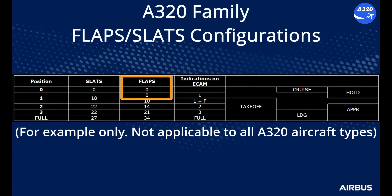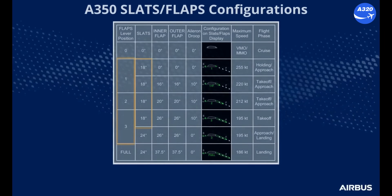As for the flaps position, they are at 0 degrees for both a flaps lever position of 0 or 1. Keep in mind that the flaps lever position at 1 can correspond to a flaps position of 0 degrees or 10 degrees. For the A330, A340, A350 or A380 FCOM, you will also see that different lever positions can correspond to the same slats angular position.